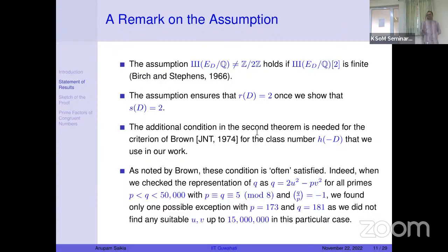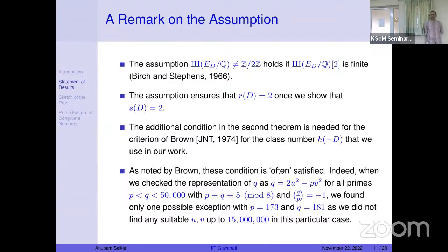We verified this numerically — Brown also noted that this condition should often be satisfied. We checked cases up to pq less than 50,000 and found possibly one exception: p = 103 and q = 181. We looked for solutions of a certain Diophantine equation up to 15 million and could not find one for that particular case. Whether this is an actual exception or just outside our search range is an interesting open question about the density of such primes.